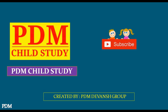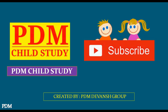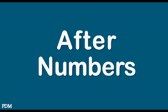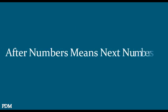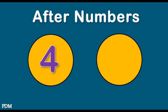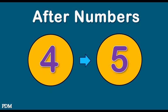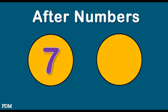Perian Child Study. Subscribe to our channel for more educational videos. After numbers means next numbers. 4, 5, 7.